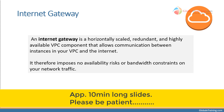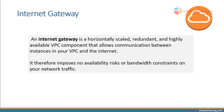Internet gateway is a virtual device provided by AWS which is horizontally scaled, redundant, and highly available, and which provides internet to your VPC. Without internet gateway, none of the components within your VPC will have access to the internet.